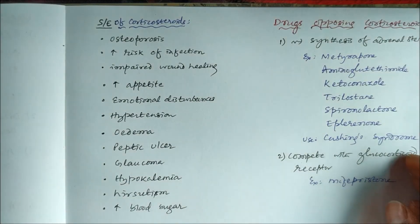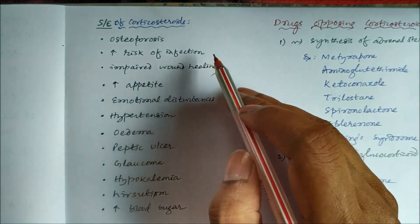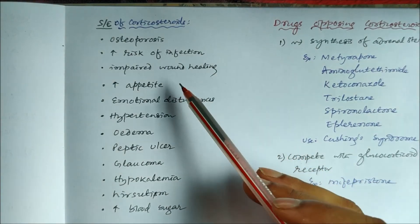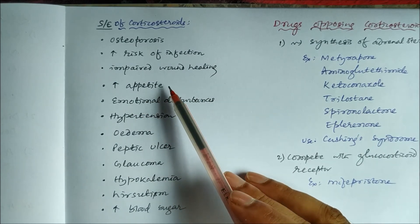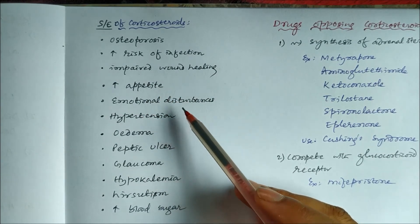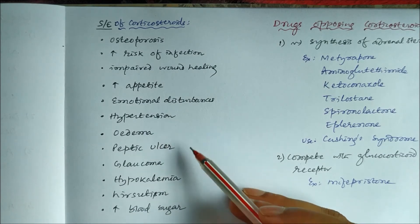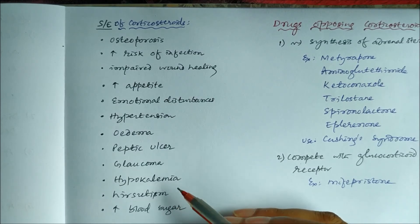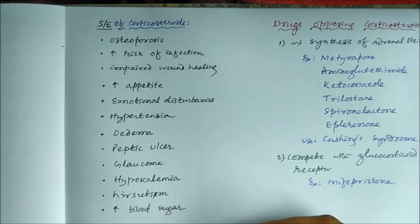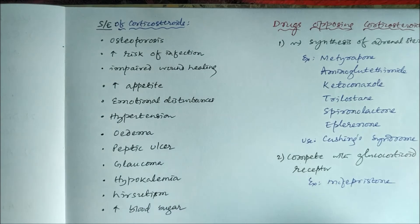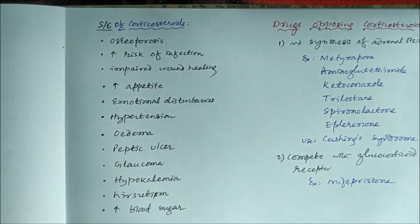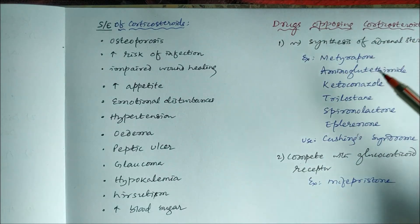Side effects of corticosteroids include osteoporosis, increased risk of infection due to immunosuppression, impaired wound healing, increased appetite, emotional disturbances, hypertension due to edema, peptic ulcer, glaucoma, hypokalemia, hirsutism — development of hair on the face in females — and increased blood sugar.